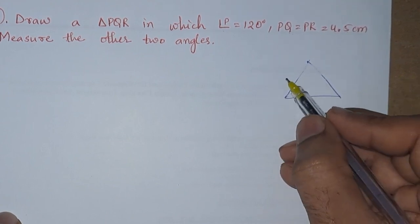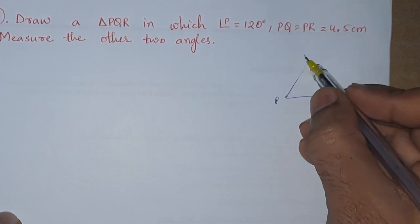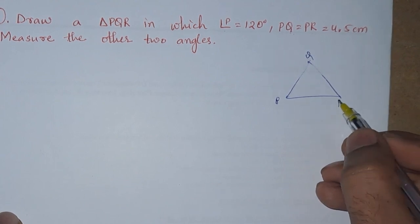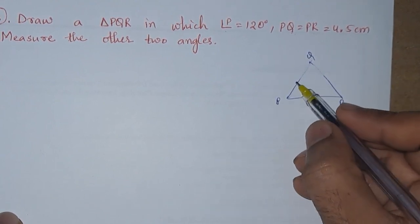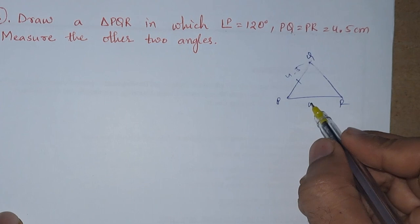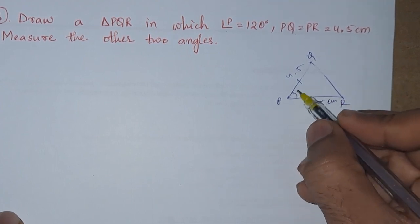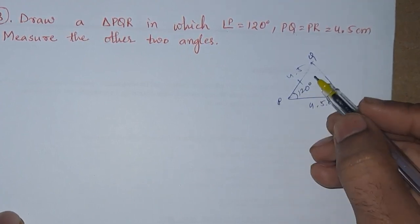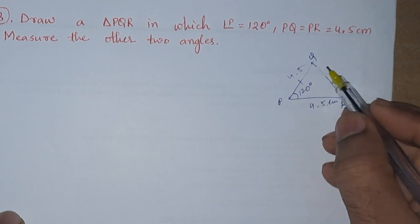Suppose this is a triangle, and this one is PQ and PR. So they have given this as 4.5 centimeters and this is also 4.5 centimeters. And here the angle is 120 degrees.